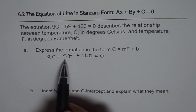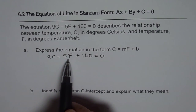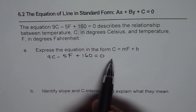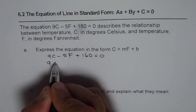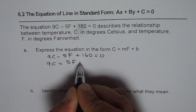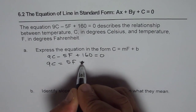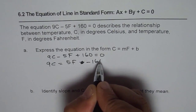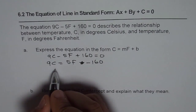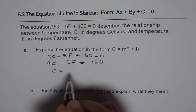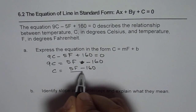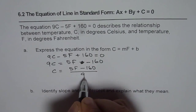To isolate C, we add 5F and subtract 160 from both sides. Doing that, we get 9C equals 5F minus 160. Now we can divide by 9, so we get C equals 5F minus 160, all divided by 9.